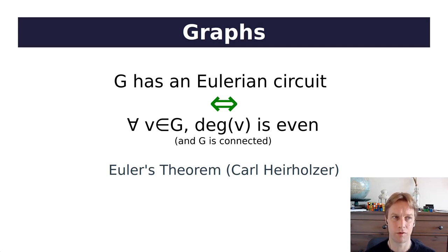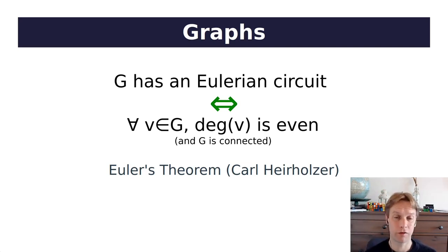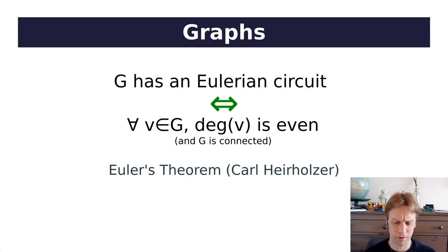But it's much more profound than that — that was the easy part. Karl Hierholzer proved something called Euler's theorem, which is that it goes the other way too: if you have a graph that's connected and all the vertices have even degree, then that graph does have an Eulerian circuit. That's really surprising. You can imagine how this might be useful — if you needed to know whether a graph had an Eulerian circuit, instead of having to find that circuit, it's enough to just check that it's connected and all vertices have even degree. So there's some useful maths for you.